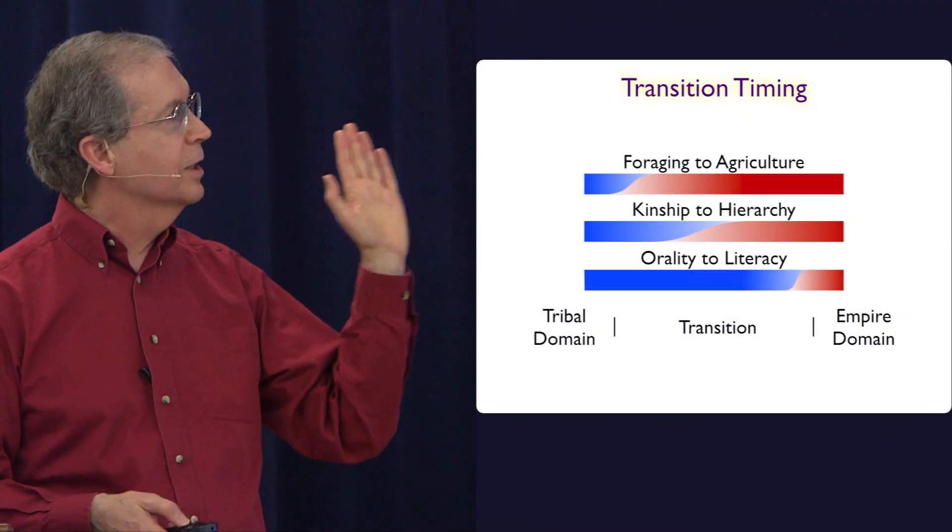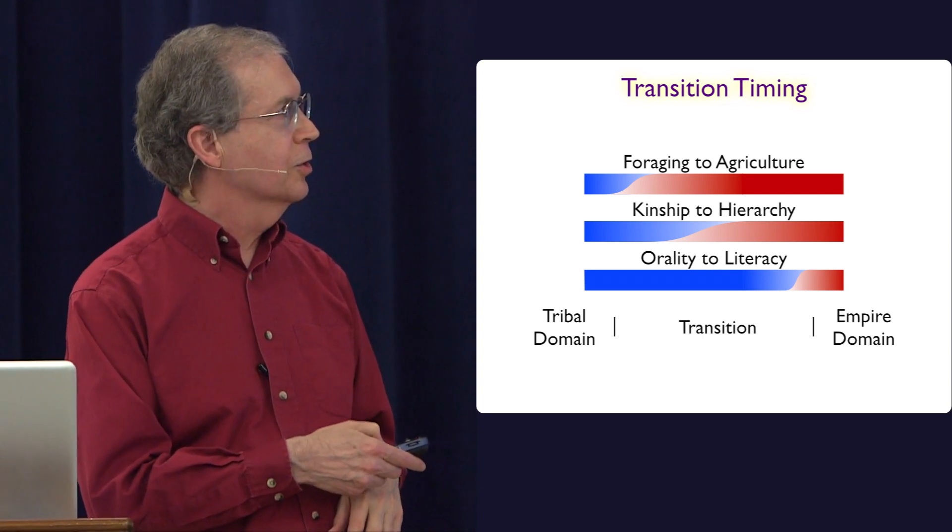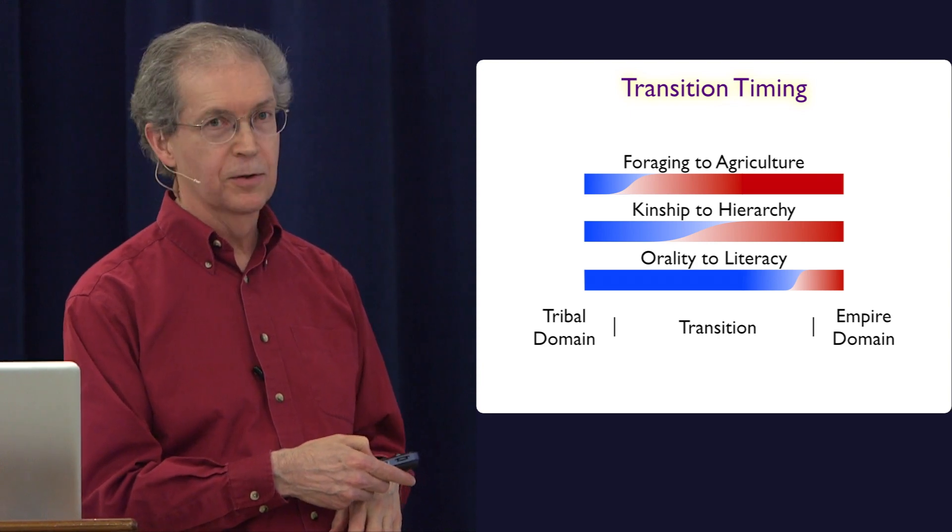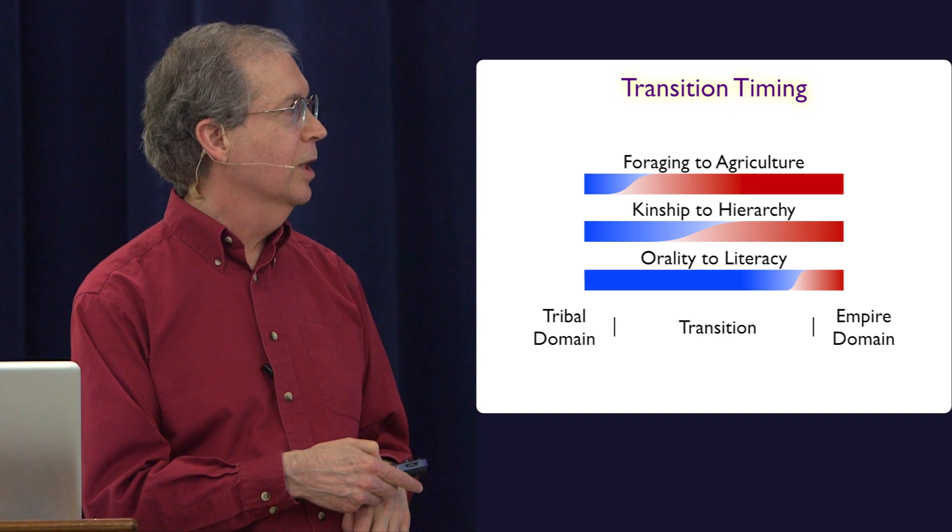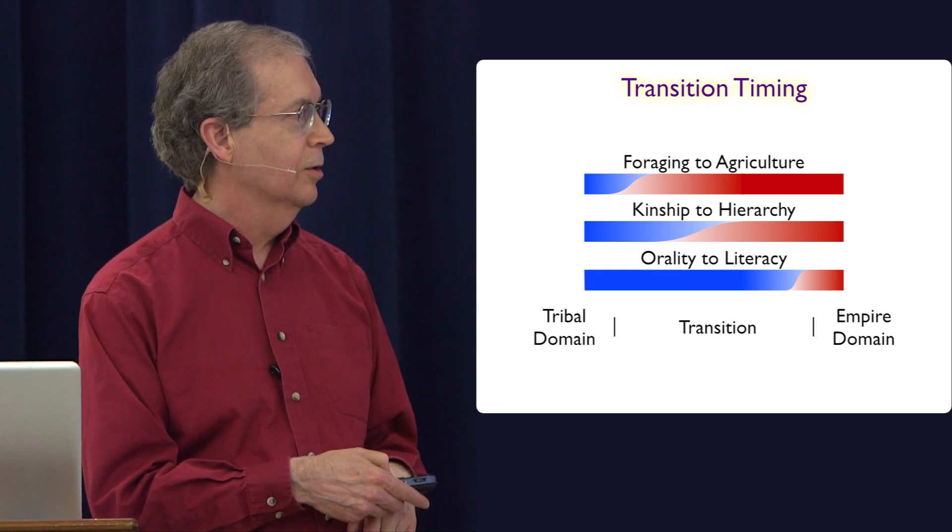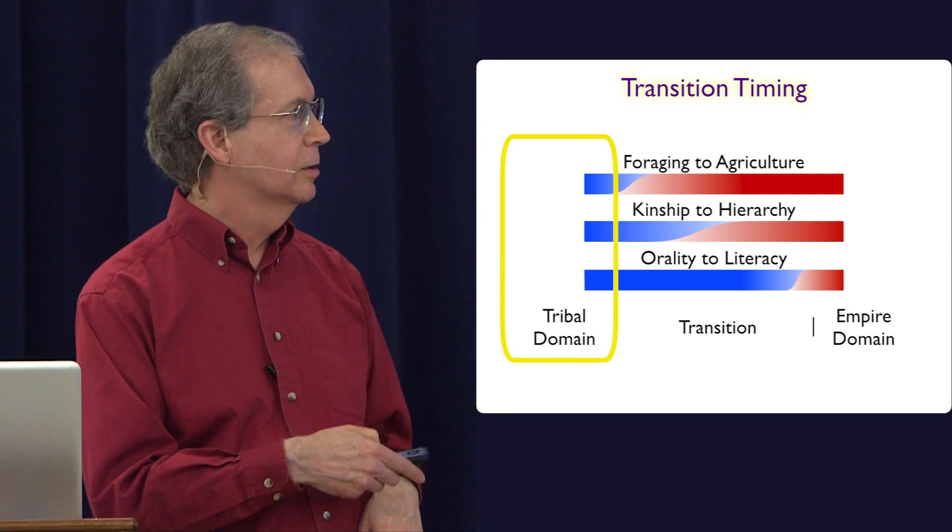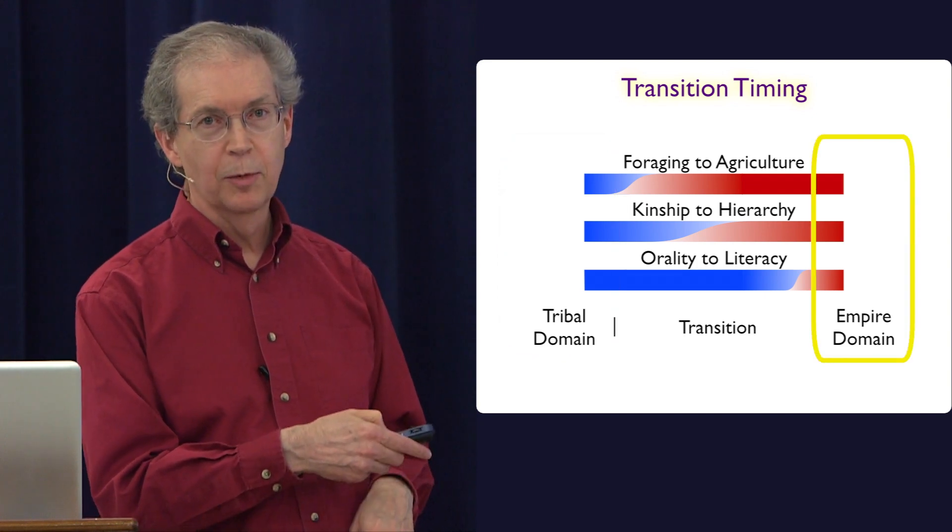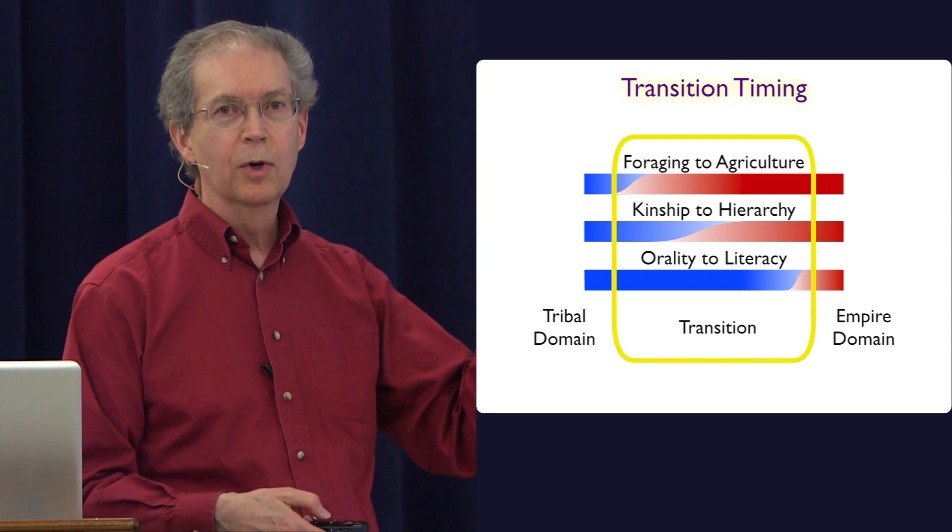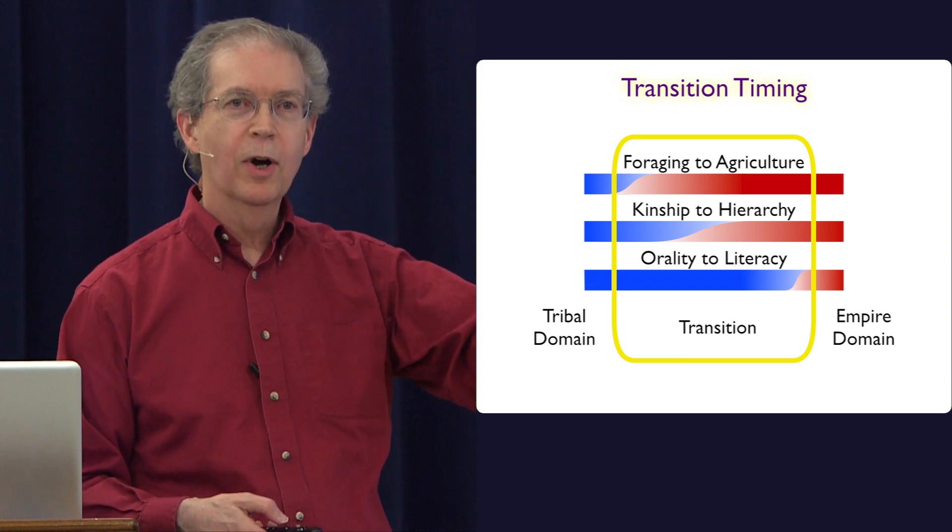If we look at this transition and the timing in the transition, the shift to agriculture really happens earlier in the period. But it, as we saw, drives other shifts. And so then you get the shift from kinship to hierarchy. And it's only at the last part that you get the shift to literacy. Before that, it's pure tribal domain. And at the end of it, it's pure empire domain. But during it, it's a kind of rolling transition where every new shift moves you into another not-quite-stable place.